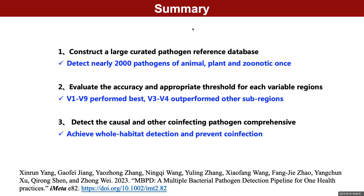In conclusion, we constructed a large curated pathogen reference database that can detect nearly 2,000 pathogens of animal, plant, and zoonotic origin. We evaluated the accuracy and appropriate threshold for each variable region, with full-length sequencing and V3 to V4 of short-read sequencing performing the best. We also comprehensively detect the causal and other potential co-infecting pathogens, achieving whole-habitat detection and co-infection prevention.